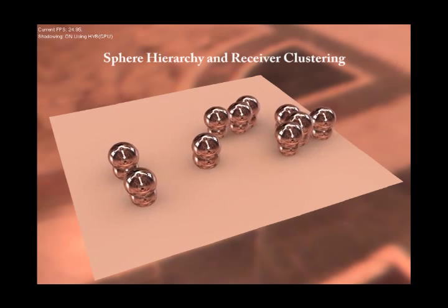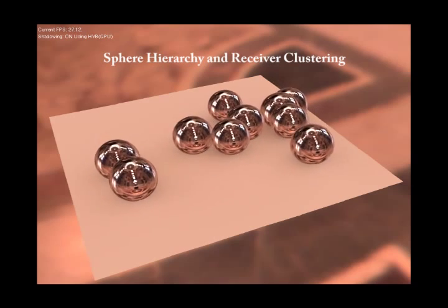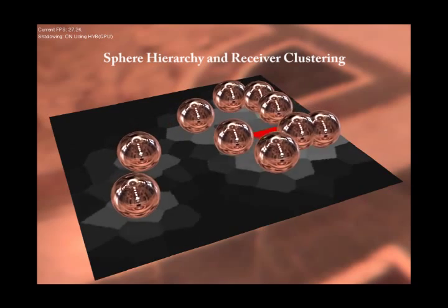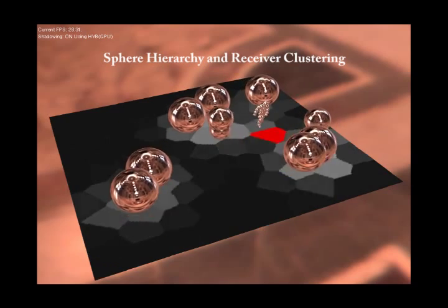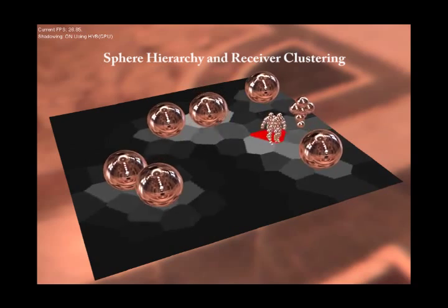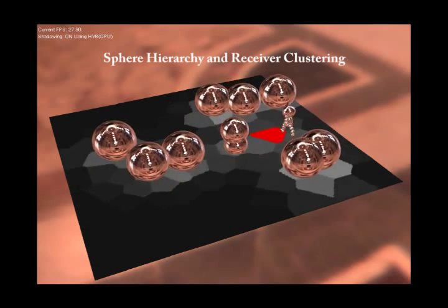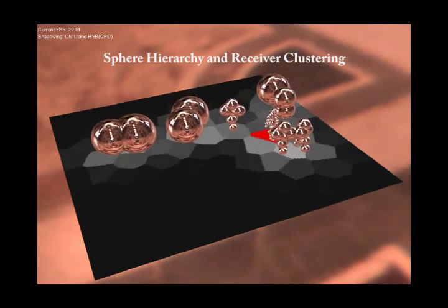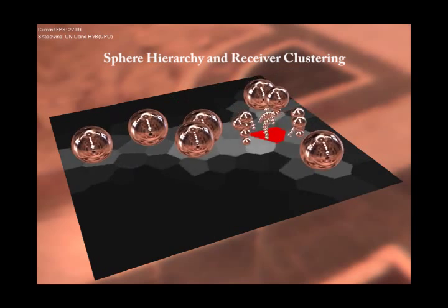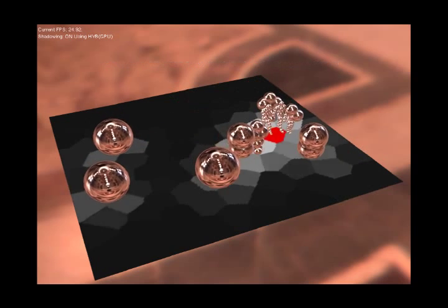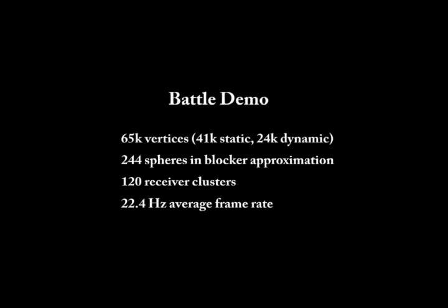This clip visualizes the blocker approximation used for the receiver cluster highlighted in red. Brightness on the ground plane corresponds to the number of blocker spheres processed for that receiver cluster.